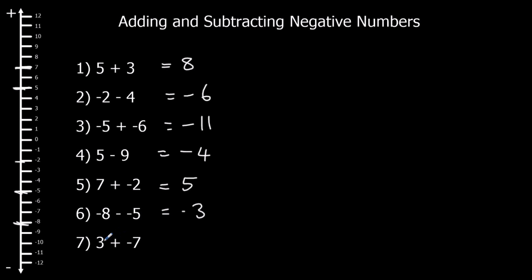And 3 plus minus 7 — up minus 7 spaces, so down 7 spaces: 1, 2, 3, 4, 5, 6, 7 — minus 4.